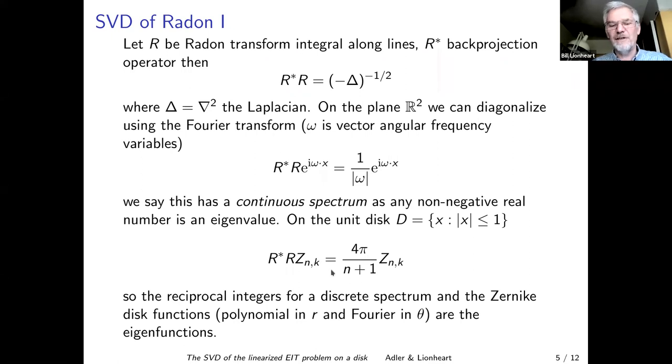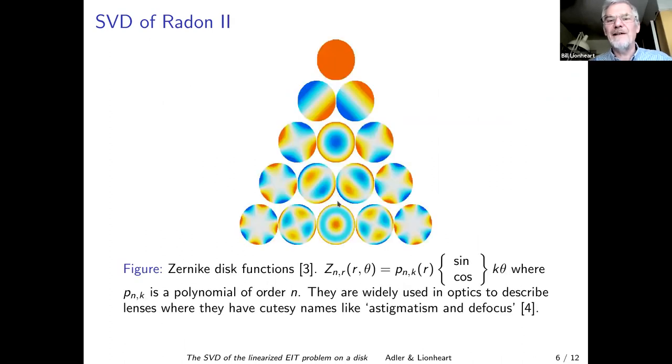These Zernike disk functions are polynomials in R and they're basically Fourier basis in theta. The n goes down and the k across and they consist of a polynomial and then trig k theta. They're used in optics to describe, for example, the design of lenses. And they get cutesy names like astigmatism and defocus. Each of these functions, the early ones have a nice name.